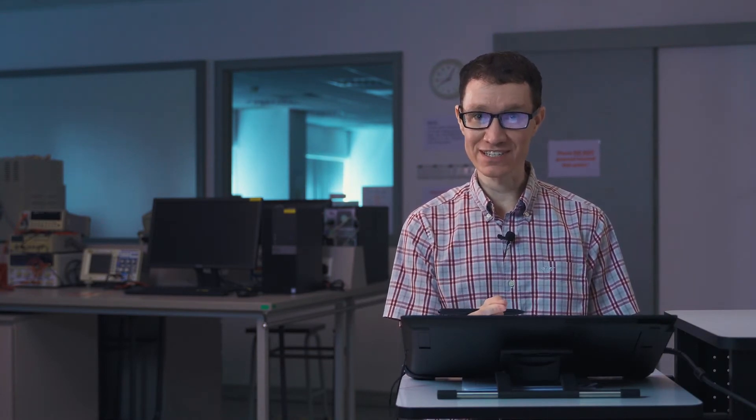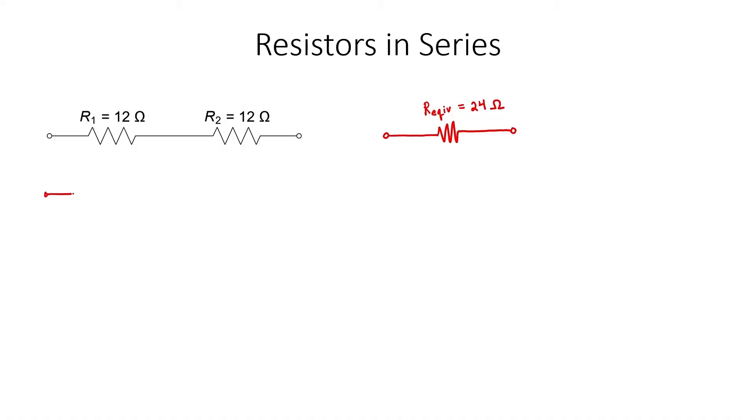It might seem obvious that one needs to do this, but let me give two different arguments why resistors in series add. I want to start off with a geometrical argument. Let's imagine that each of these two resistors have the same resistivity and the same cross-sectional area. Let's call that cross-sectional area A. Let's call the resistivity rho.